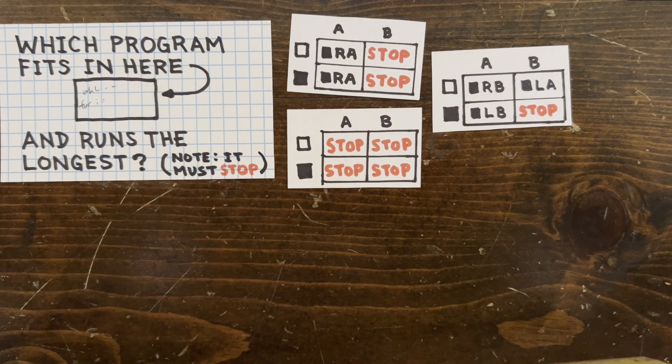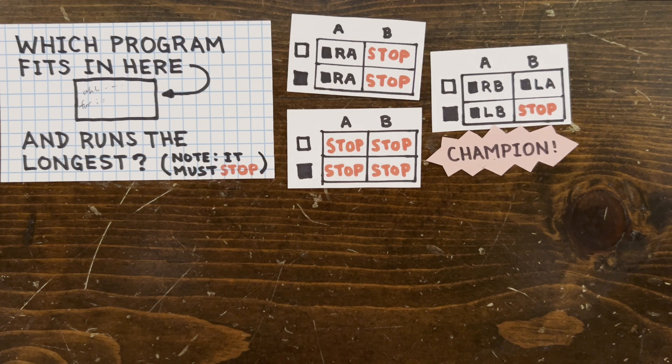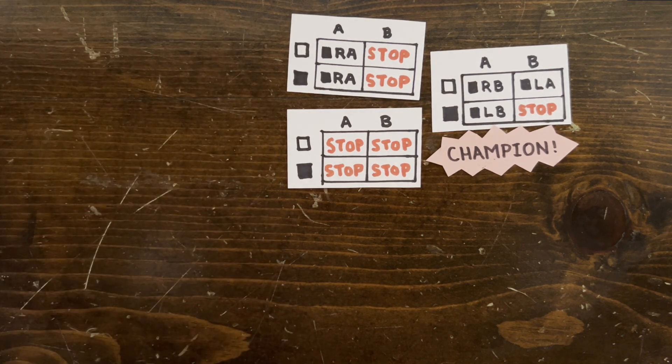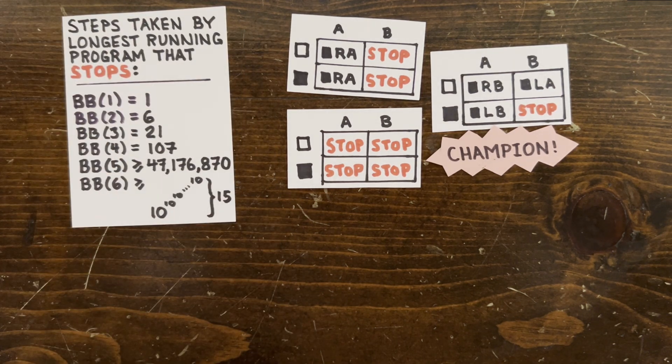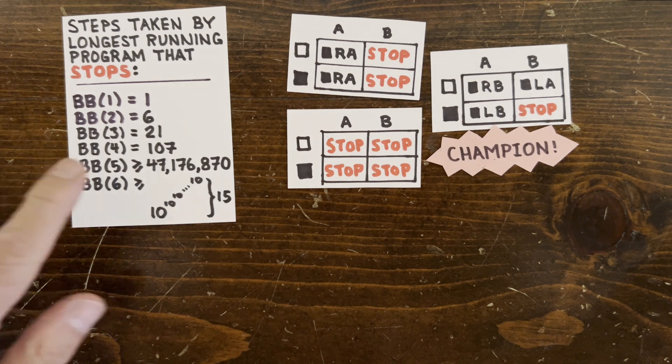The busy beaver function records the step count for the champions of every program size. For two state programs, BB(2) equals 6. For three state programs, BB(3) equals 21.